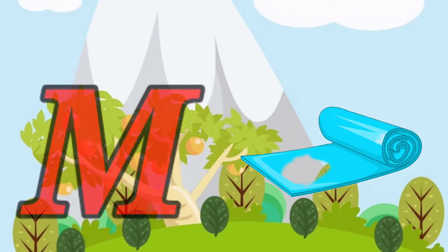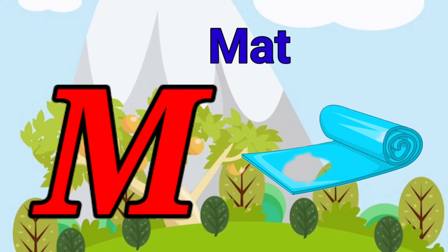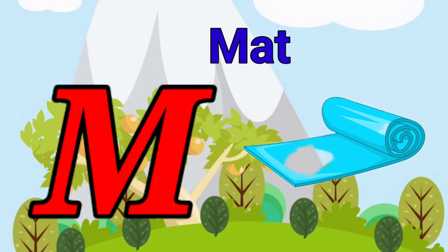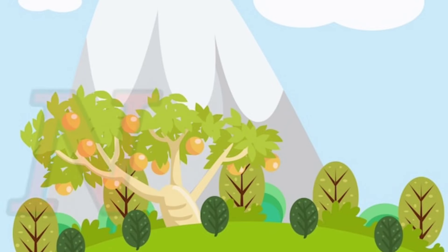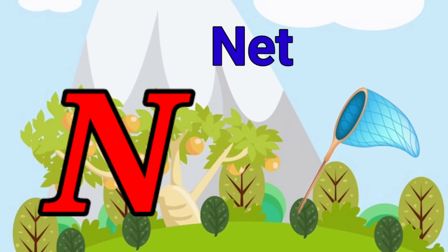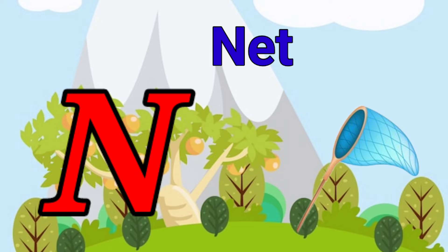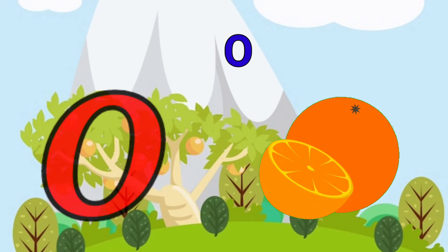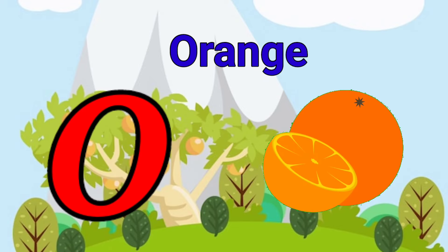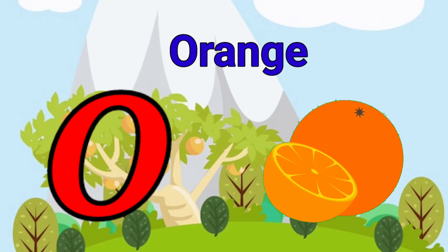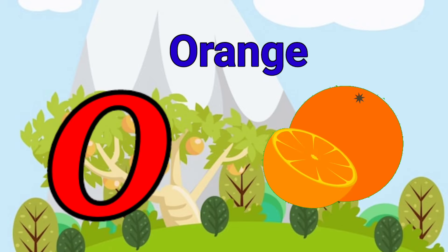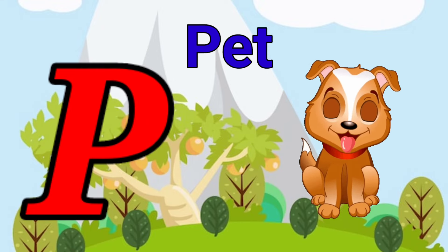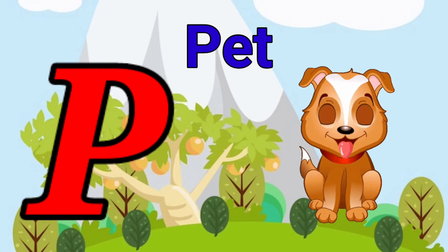M is for mat, m-m-mat. N is for net, n-n-net. O is for orange, o-o-orange. P is for pet, p-p-pet.